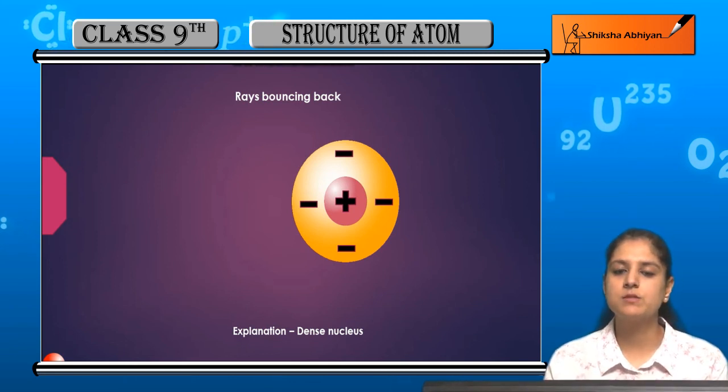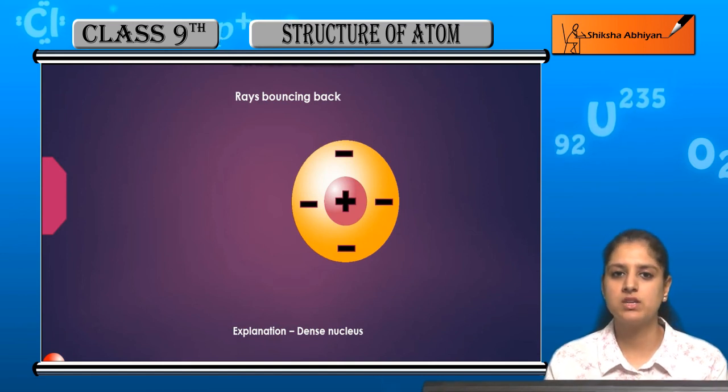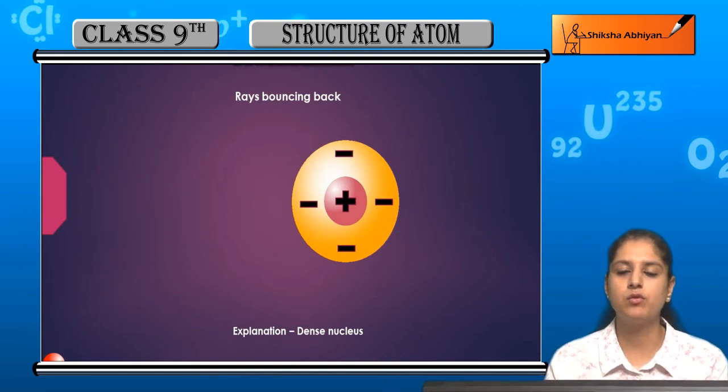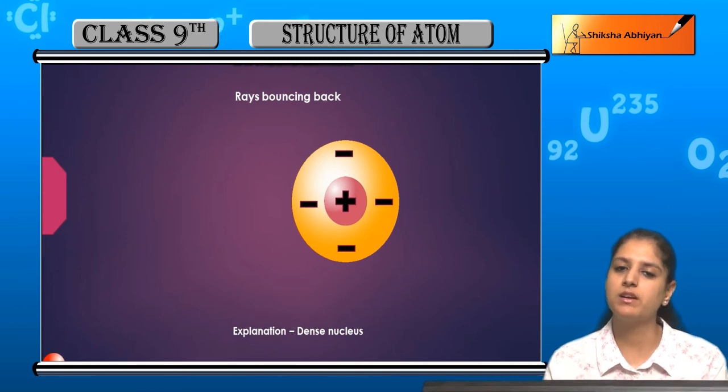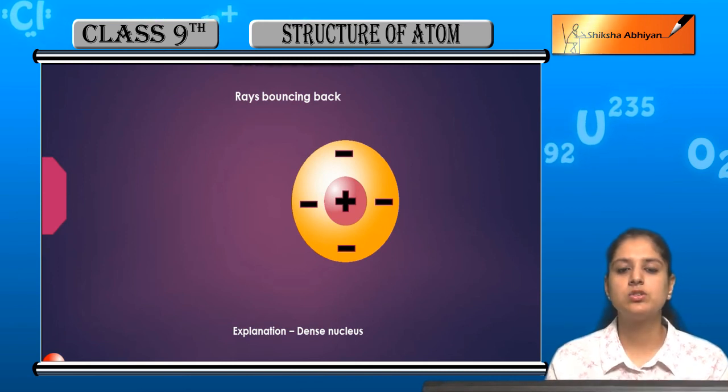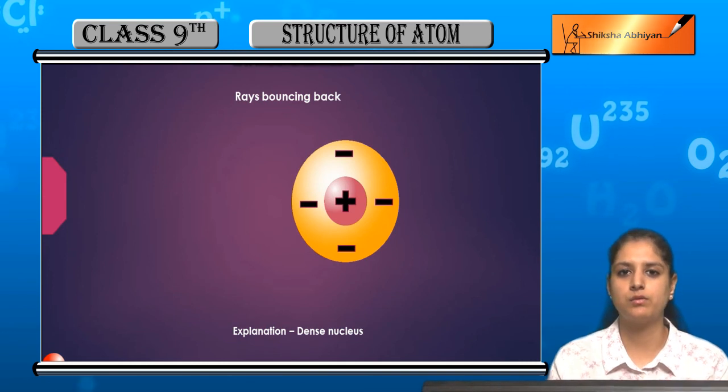A dense, positively charged body causes the alpha particles to reflect back. This is how the nucleus was discovered by Rutherford.